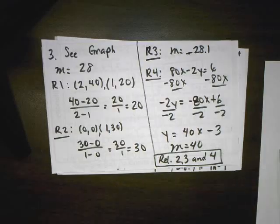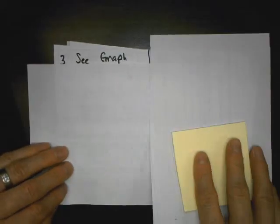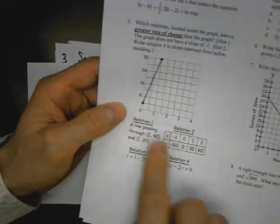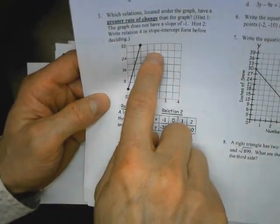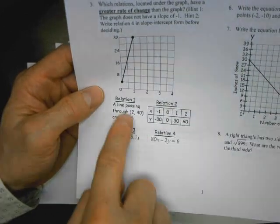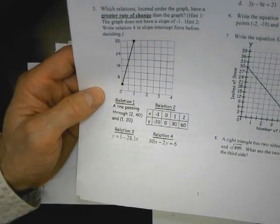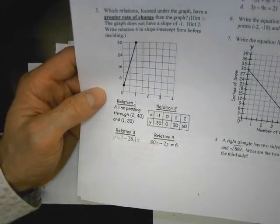Number 3. For number 3, we're going to need to look at the graph. We're going to have to find the slope of this and then compare these four slopes and say which one has a greater rate of change or a higher absolute value. So looking at the graph, I see that I have to rise up.